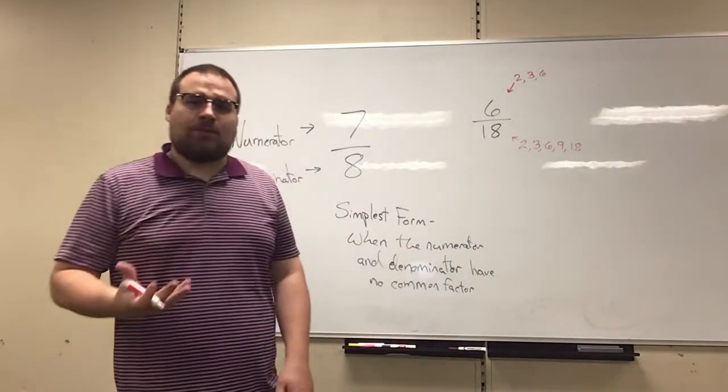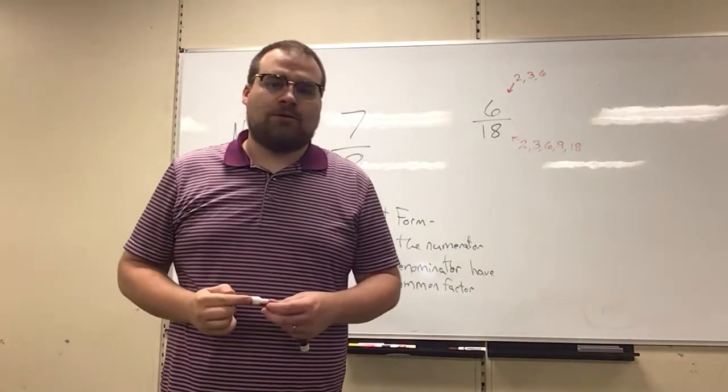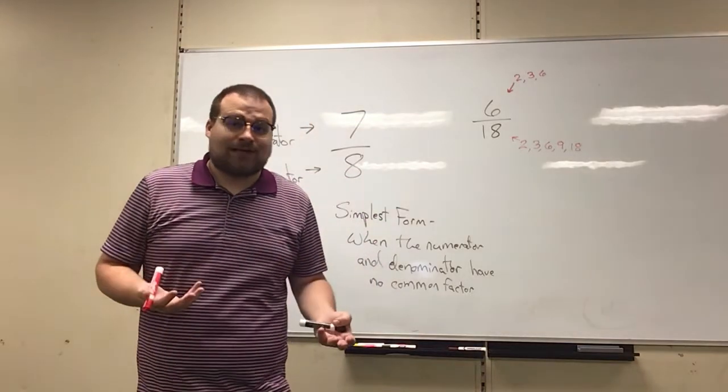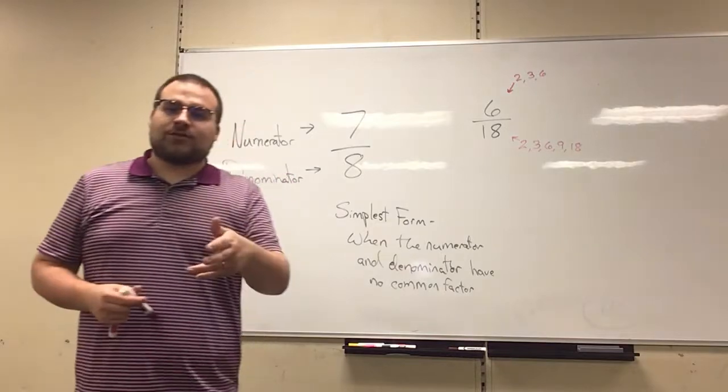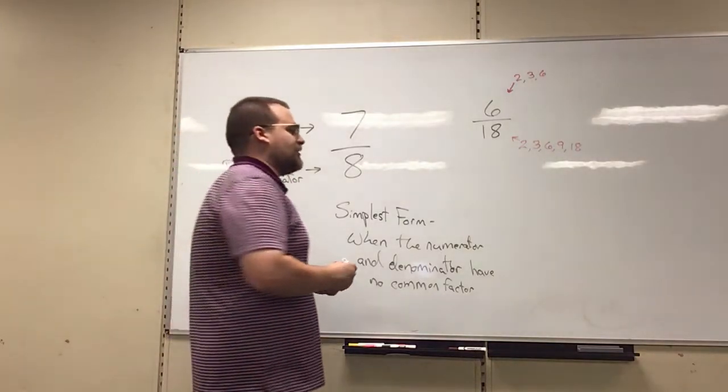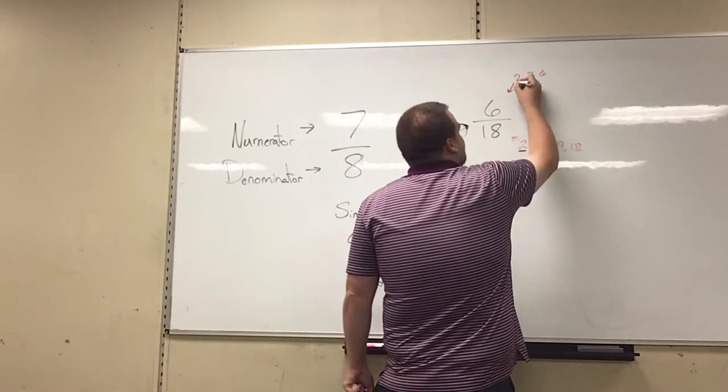Those are all the numbers that it's divisible by. And we want to figure out, what kind of factors do these have in common, if any? Yeah, you'll notice they share some factors here, right? They share 2, 3, and 6.